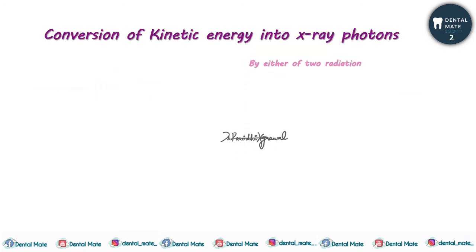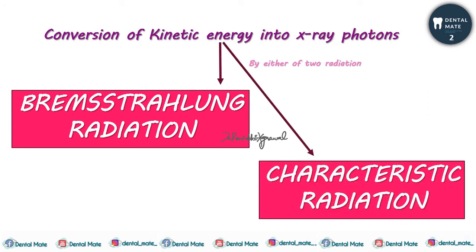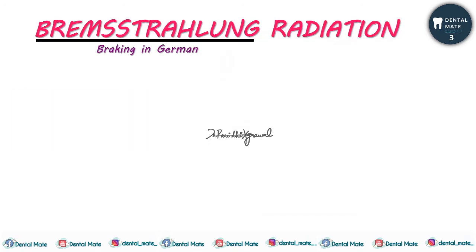The conversion of kinetic energy into X-ray photons can be by either of two radiations: first is Bremsstrahlung radiation, and the next is characteristic radiation. The word Bremsstrahlung means 'braking' in German, so this is actually called braking radiation.